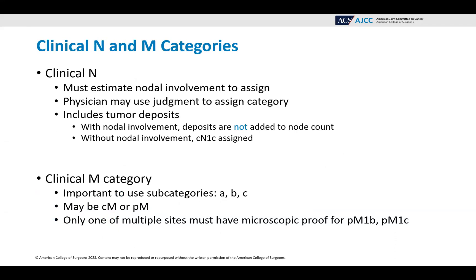For clinical N and M categories: for clinical N, you must have an estimate of the nodal involvement in order to assign the category, and physicians may use their judgment. It does include tumor deposits — they belong in the N category. If there's nodal involvement, deposits are not added to the node count; without nodal involvement, clinical N1C is assigned. For the clinical M category, it's important to use subcategories A, B, and C. This may be used with either cM or pM because the M category is based on the method of assessment, not whether it's clinical or pathological stage classification. Only one of multiple sites must have microscopic proof in order to assign pM1B or pM1C — you do not need microscopic proof of all sites.